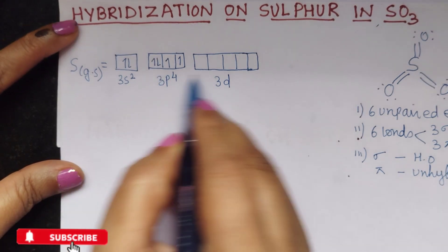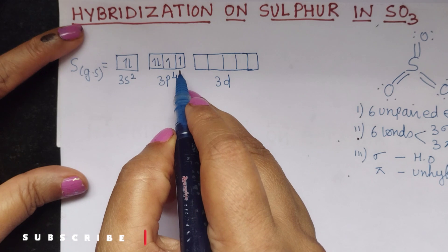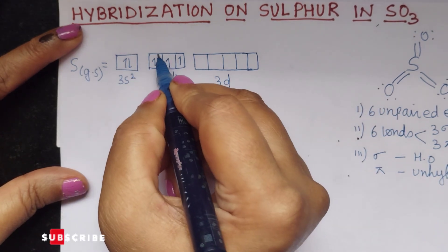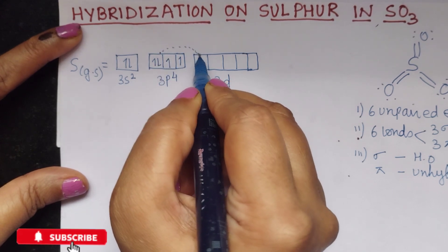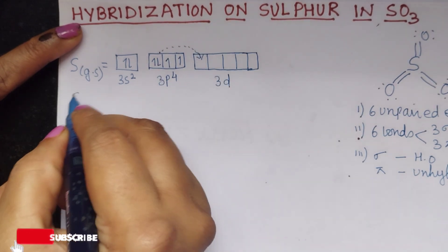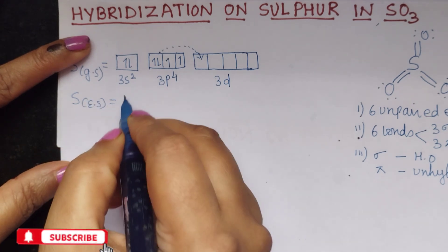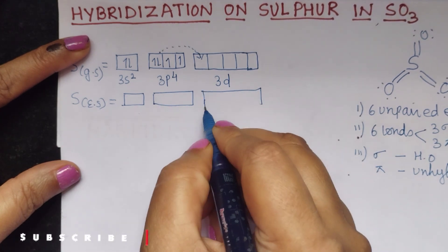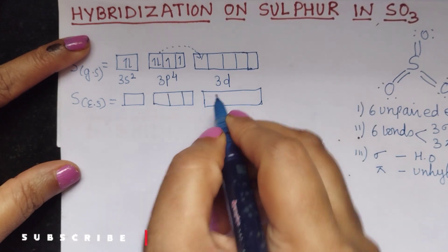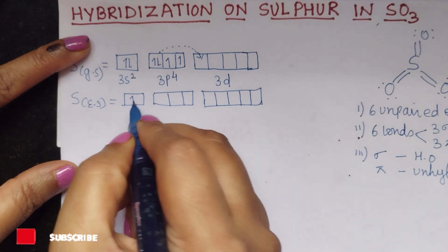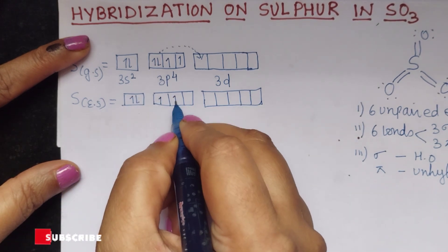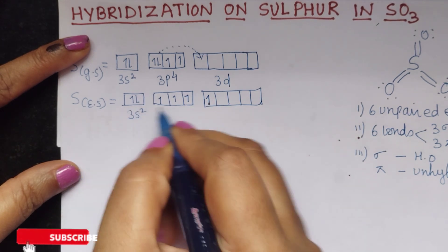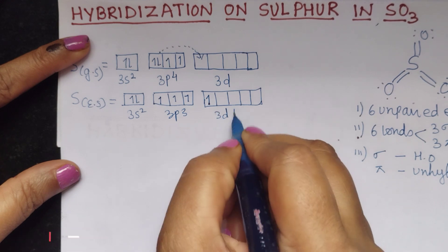In the ground state, there are only two unpaired electrons, and therefore we need to carry out the excited state. In the excited state, one electron gets excited to the vacant d orbital. So sulfur in the first excited state will have the configuration 3s2, 3p3, and 3d1.